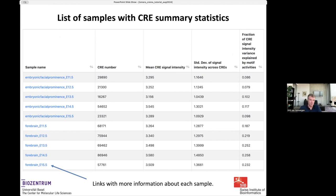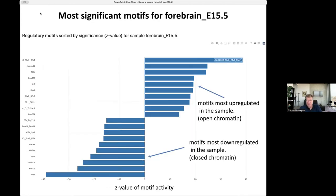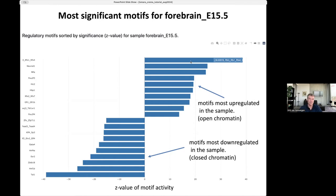You can click further to get additional information about the CRUNCH results — mapping quality, noise characteristics, and more. For each sample, you also get a summary of the most significantly up- and downregulated motifs. For example, for forebrain at embryonic day 15.5, the most upregulated motif was RFXE, NeuroD1, NFIA — with RFXE almost 38 standard deviations upregulated — while the most downregulated was TAL1 at almost 40 standard deviations down.